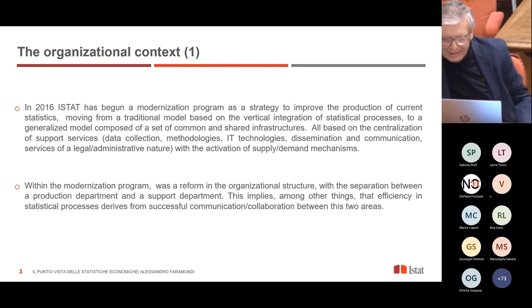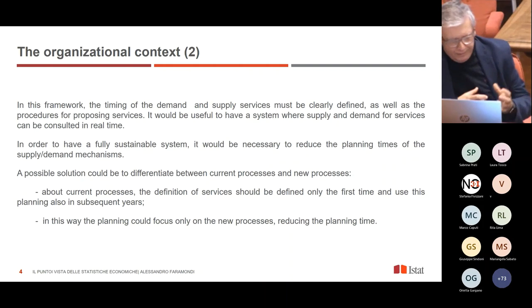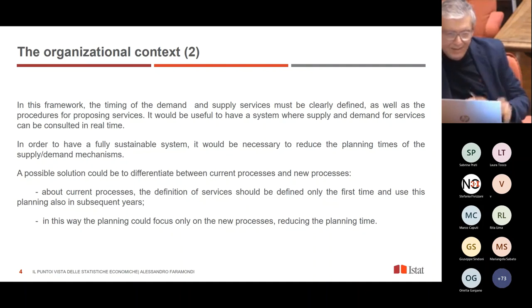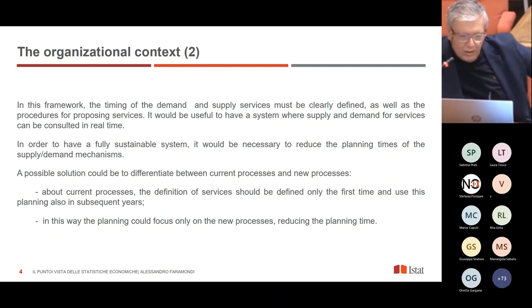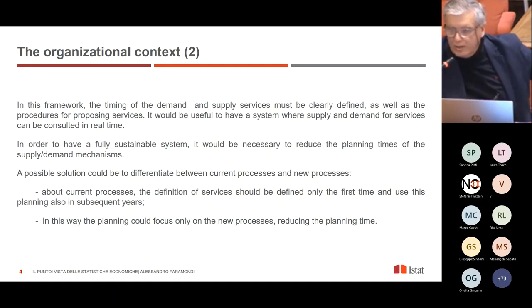About the organizational context: in 2016, ISTAT began a modernization program as a strategy to improve the production of current statistics, moving from a traditional model based on vertical integration of statistical processes to a generalized model composed of a set of common and shared infrastructure. All these infrastructures are based on the centralization of support services with the activation of a supply-demand mechanism. Within this modernization program was a reform in the organizational structure with the separation between the production department and the support department. This implies that efficiency in statistical processes derives from successful communication and collaboration between these two areas.